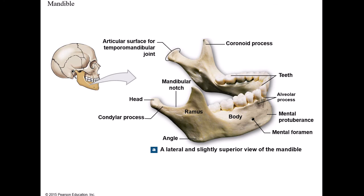The 14th bone is the mandible, and it is the only facial bone that moves. The main front part is called the body - running from the chin to either side. Just like the maxilla, there are sockets for the teeth called the alveolar process. The part going up toward the temporal bone is called the ramus.